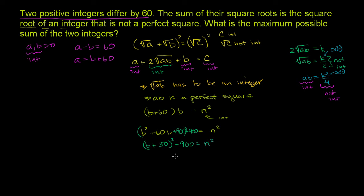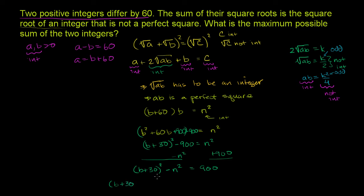Subtracting n² from both sides and adding 900 to both sides, we get (b + 30)² minus n² equals 900. This is a difference of squares, so it factors as (b + 30 + n) times (b + 30 - n) equals 900.